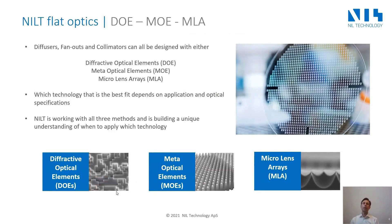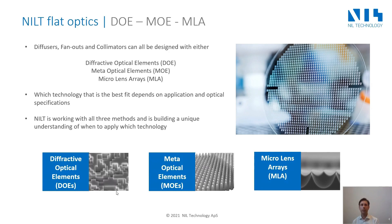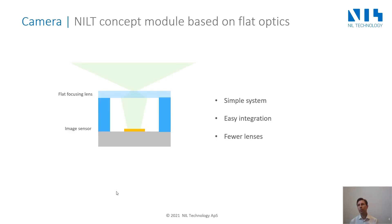Today I'm going to talk about flat optics such as diffractive optics, meta optics, and micro lens arrays. What I find interesting about these is that when you're trying to make diffusers, fan outs, or collimators, all of these can be designed with either a DOE, MOE, or MLA. Which technology is the best really depends on the application and the optical specifications. Since NILT works with all three methods, we're building up a unique understanding of when to apply which technology.